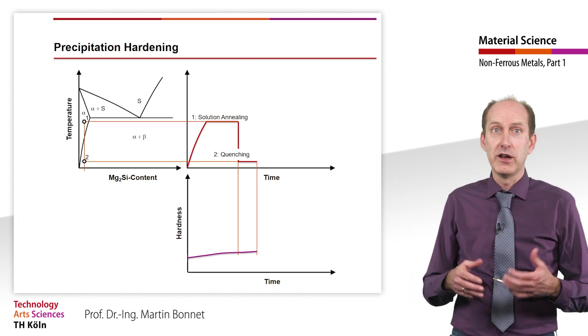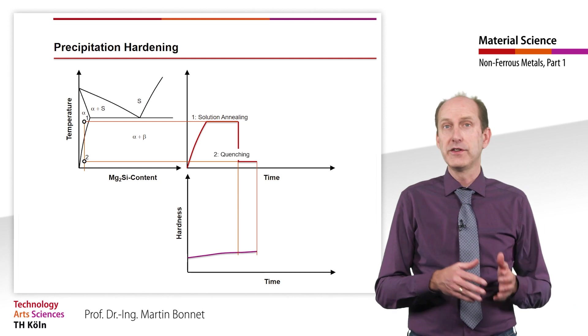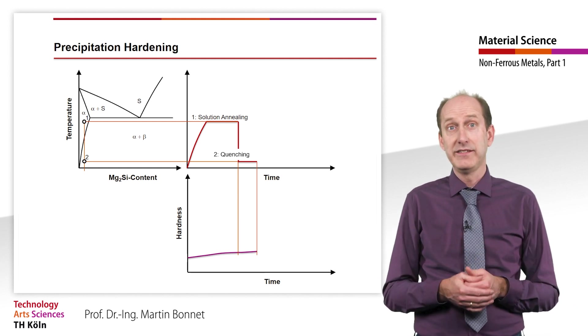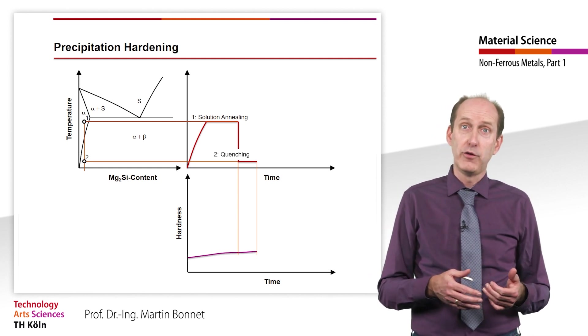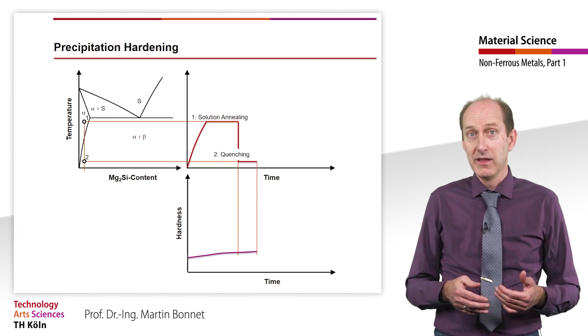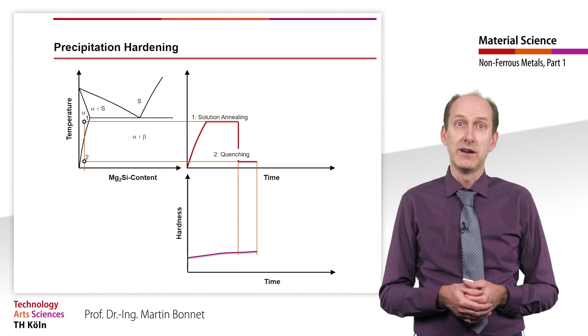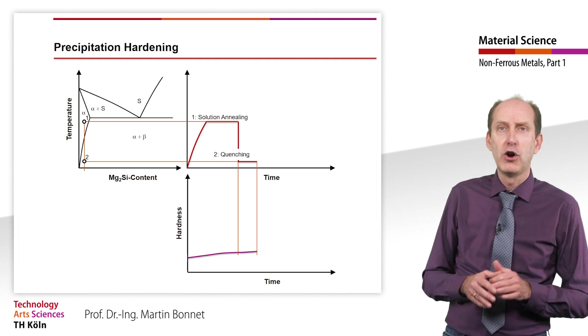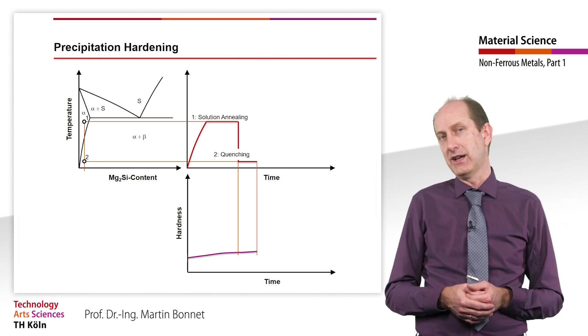In this state, however, the alloys are still soft and formable. Unlike steel, which would already form the hard martensite here, the lattice distortion in all aluminum alloys causes only a minimal increase in hardness.